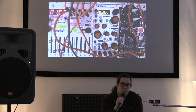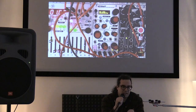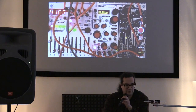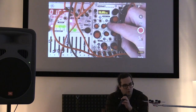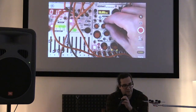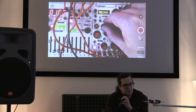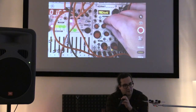Kermit holds 64 waveforms internally, which are separated into eight different banks. You access the banks by using the alternate parameter selection, where you hold down the channel select button and turn the waveform knob. Now it will pick from the different waveform banks.